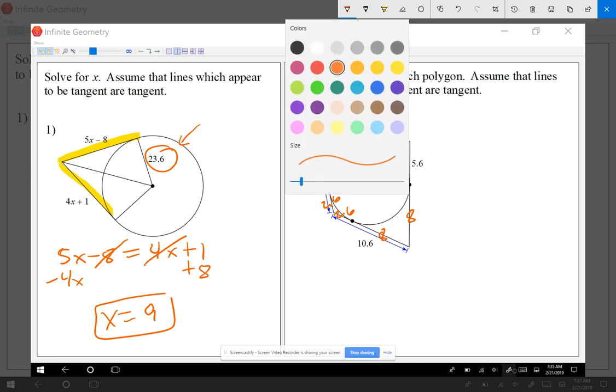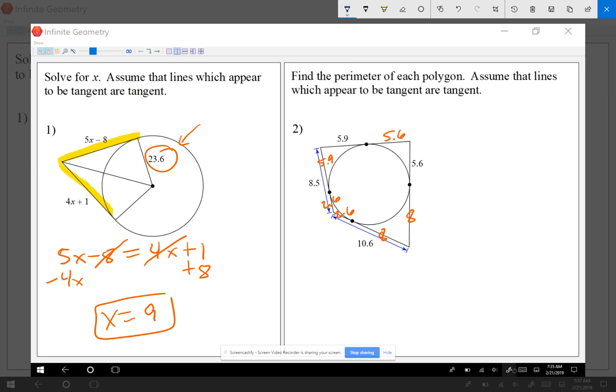Now I'm going to find a perimeter. This is asking you to find a perimeter of the polygon. One of my sides of the polygon is 8.5, which was given to begin with. Another side is 10.6, which was also given to begin with. On the top, I'm going to add 5.9 plus 5.6, and I'm going to get that that side is 11.5. At the right, I'm going to add those two, 5.6 plus 8, and I'm going to end up getting that this is 13.6.